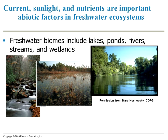Current, sunlight, and nutrients are important drivers or abiotic factors in how freshwater ecosystems develop. In addition to lakes, freshwater biomes also include streams and wetlands. The speed of water plays a key role in the removal and deposition of sediments in rivers and streams. Near the outer edge of a curve, a river or stream will erode the bank, while in places where the river slows down, such as along the inside of curves, sediment tends to be deposited. So you get this winding, meandering behavior of streams and rivers. Wetlands are a particular type of freshwater ecosystem where water drains into some kind of low spot, and these areas tend to be very highly productive.